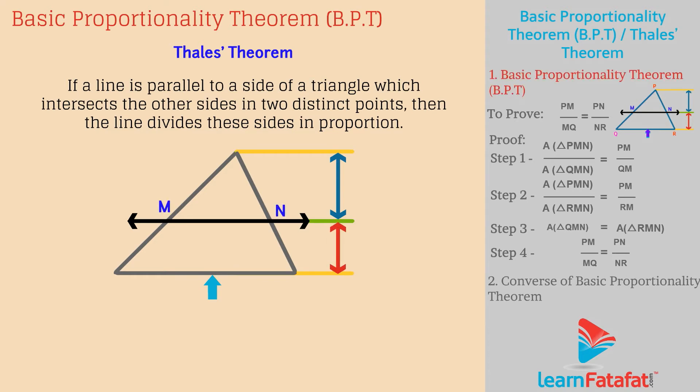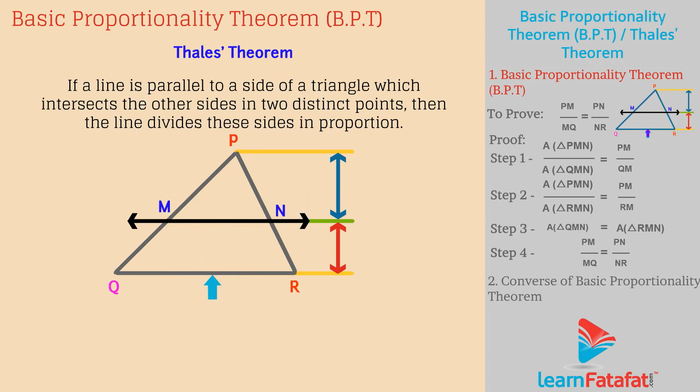Mathematically, if a line MN intersects the two sides PQ and PR of a triangle PQR and is parallel to the third side QR, then PM divided by MQ is equal to PN divided by NR.